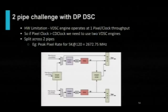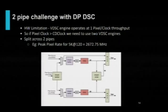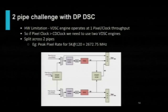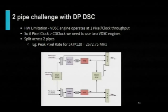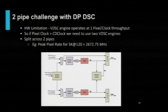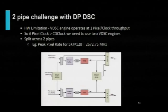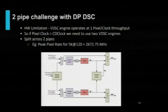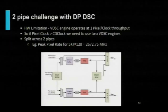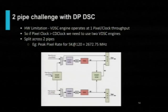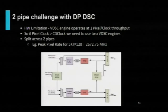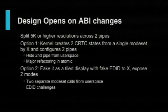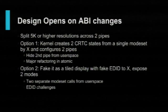One of the challenges with DSC for higher resolutions is that because of hardware limitations, the VDSC engine on every pipe can only operate at one pixel per clock. So for higher resolutions and higher frame rates, if the pixel clock is greater than the CD clock, you need to split the frame across two pipes. For example, in case of 5K at 120Hz, the pixel clock is going to be 2500 MHz, which is way higher than the CD clock we support on the platform. So there are some design open questions and possible changes needed in the kernel and userspace interface.